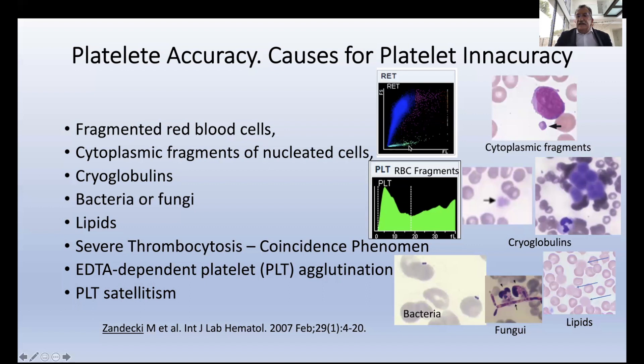Another possible reason for platelet inaccuracy is cytoplasmic fragments of nucleated cells. We can see here a case of a blast with a fragment that is increased when you are giving chemotherapy, because chemotherapy provokes apoptosis. Apoptosis causes fragments of cells to appear as platelets, and many counters count these as platelets. But using fluorescence and optical platelets, these particles don't have nucleic acids, the fluorescence is negative, and you can differentiate them.